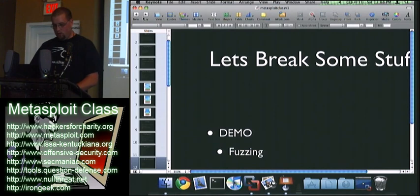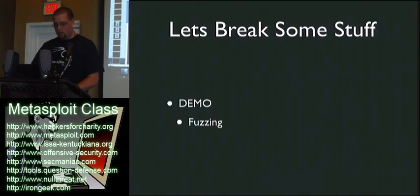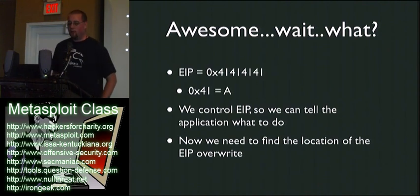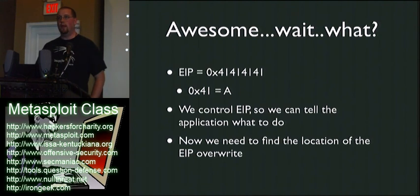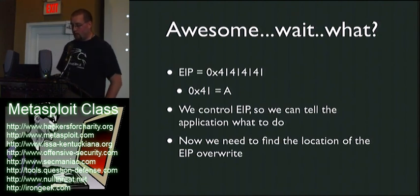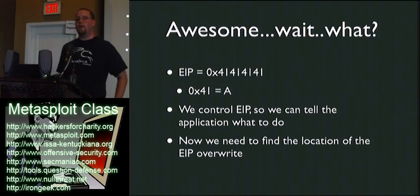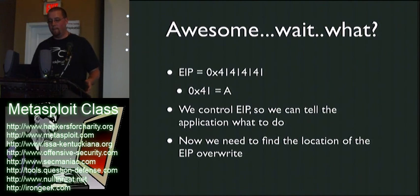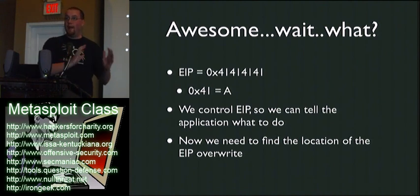So back to the slides. EIP equals 41414141, which 4141 is hexadecimal for the letter A. So we overwrote it with our A's. Now that we control it, we can tell it what to do. But we need to find out where in that series of A's — the 300 to 500 A's we sent — where that 4-byte override occurs.